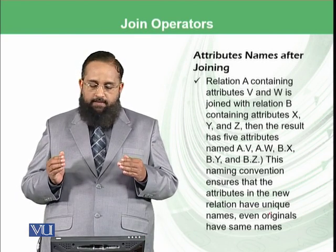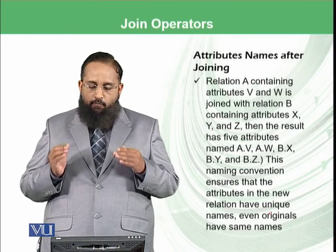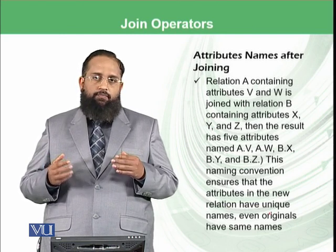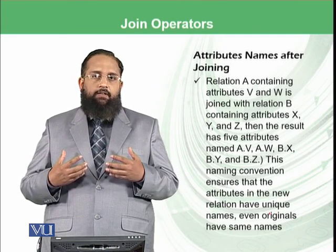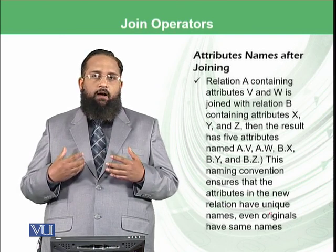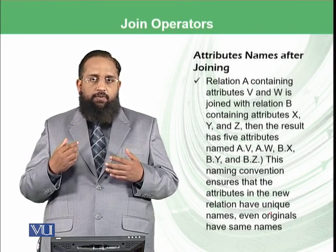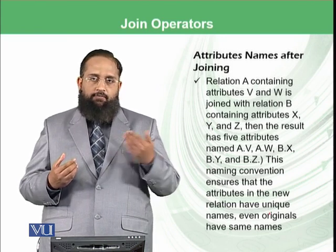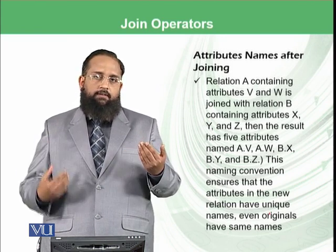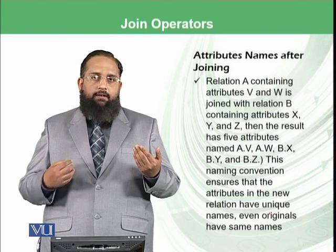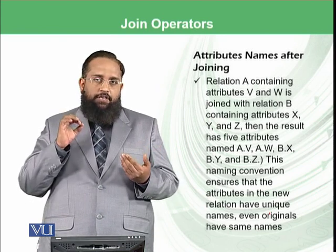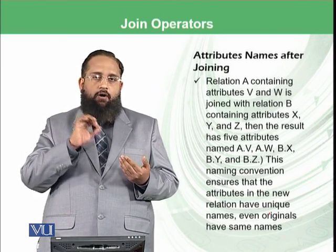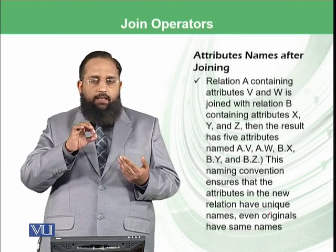For example, if both relations have attribute V, then in the resultant there would be confusion about which relation V is representing — either the first one or the second one. So we add the relation name before it, like A.V or B.V.